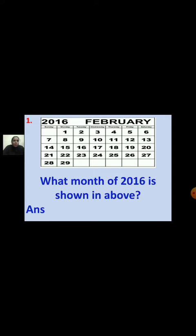First question: What month of 2016 is shown above? When we see a calendar we first look at the month and the year. The calendar is of the year 2016. This calendar is of which month? You can see the name of the month is given — the name of the month is February. So the calendar shown is of February month.